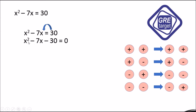First of all we have to find the multiplication of the first and last digit, which is 1 × 30 = 30. We have -7 in the middle, so we need to split -7 such that the product is 30. One value will be negative and another positive: -10 and +3, which gives -7.